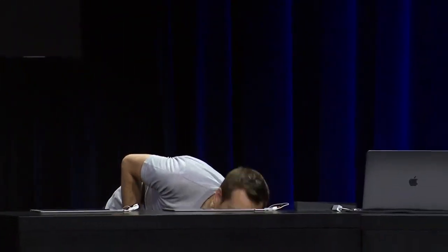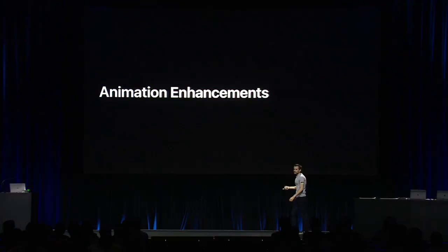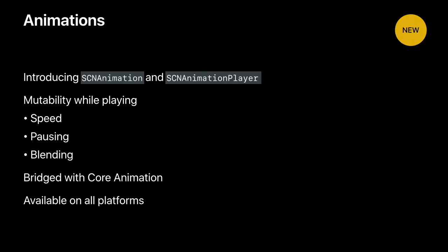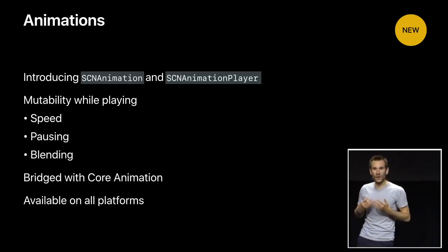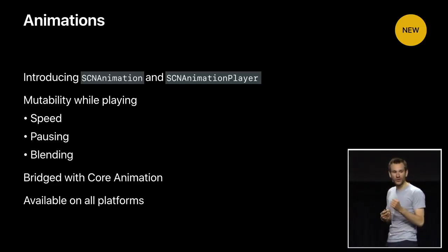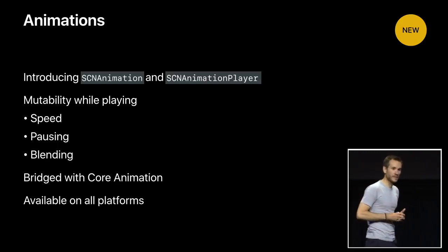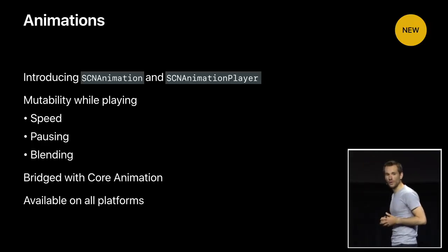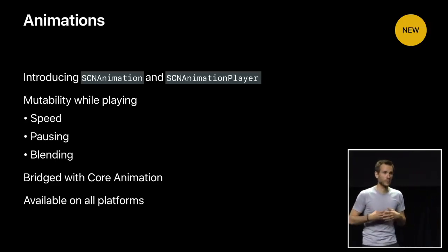Now let's look at something completely different — our enhancements to animation APIs. This year, we are introducing the new SCNAnimation protocol as well as the SCNAnimationPlayer class. They make it easier to start animations and to mutate them while they are running. Now you can easily change the speed of an animation and blend animations on the fly. We still fully support CA animation APIs — CAAnimation conforms to the new protocol. But with the new APIs, it's much easier to work dynamically on animations while they are running. These APIs are available on all platforms, including watchOS.